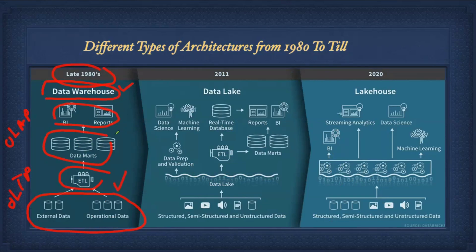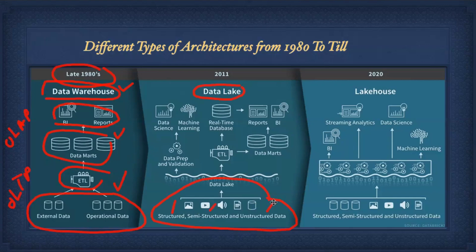In 2010 and 2011, the data lake came into the picture, mainly with on-premises big data — distributed file systems like HDFS, MapReduce, and later Spark. A data lake can store any kind of data: structured, semi-structured, and unstructured. Whether on-premises or cloud, the data lake is a common concept — on-premises means HDFS.